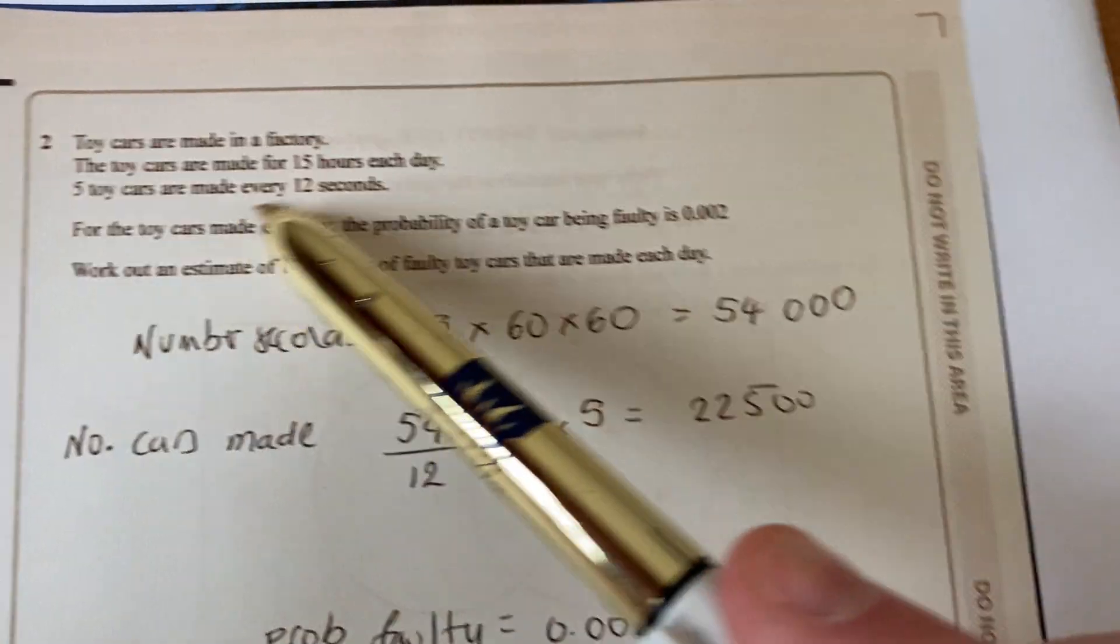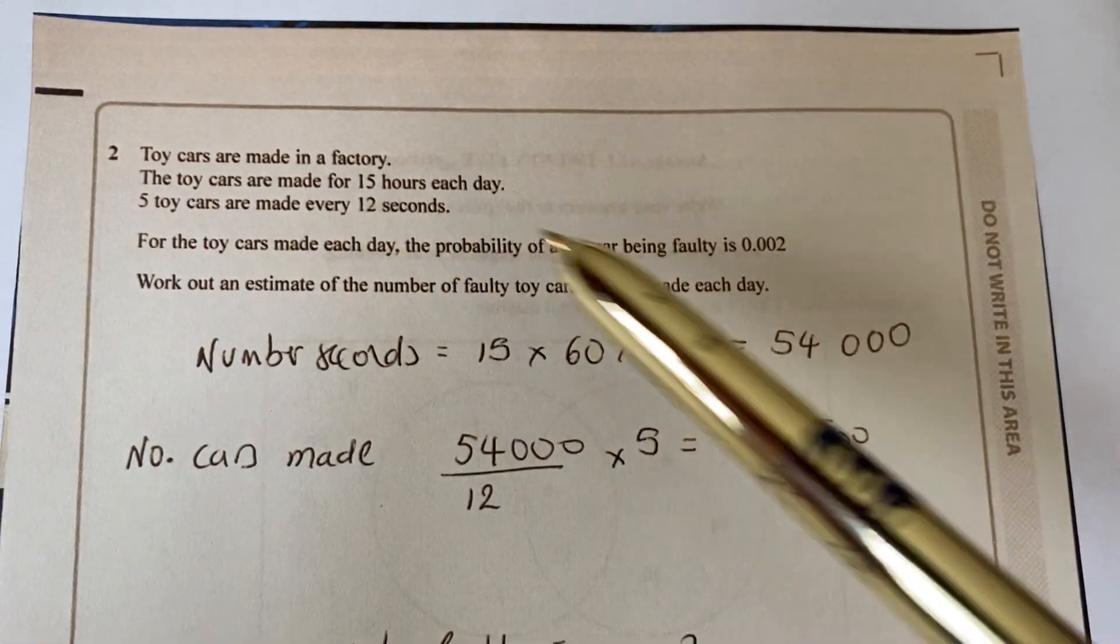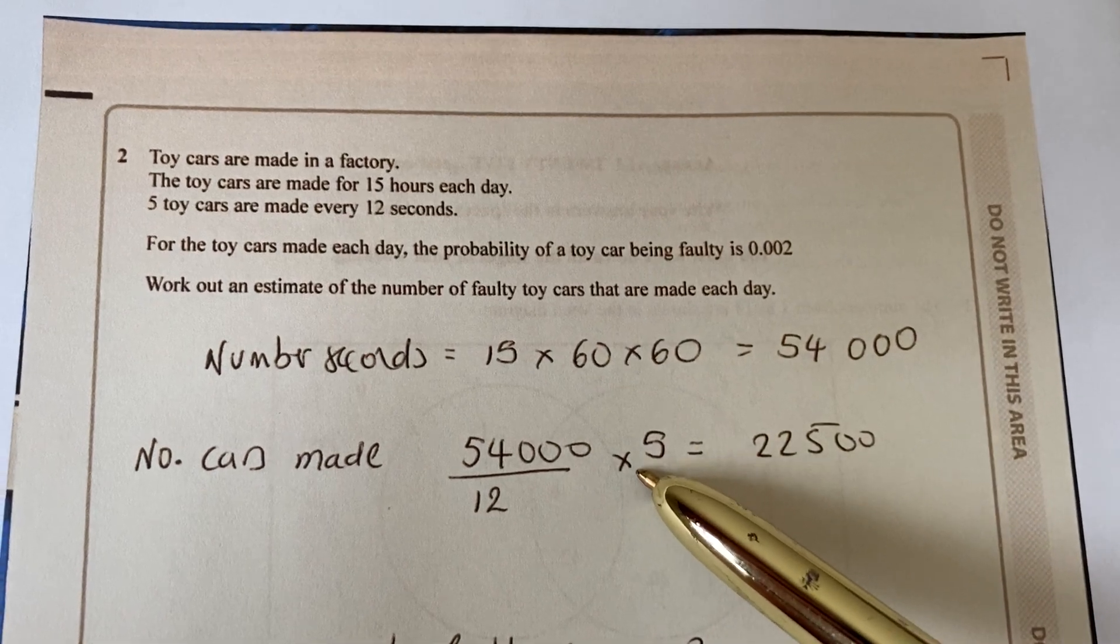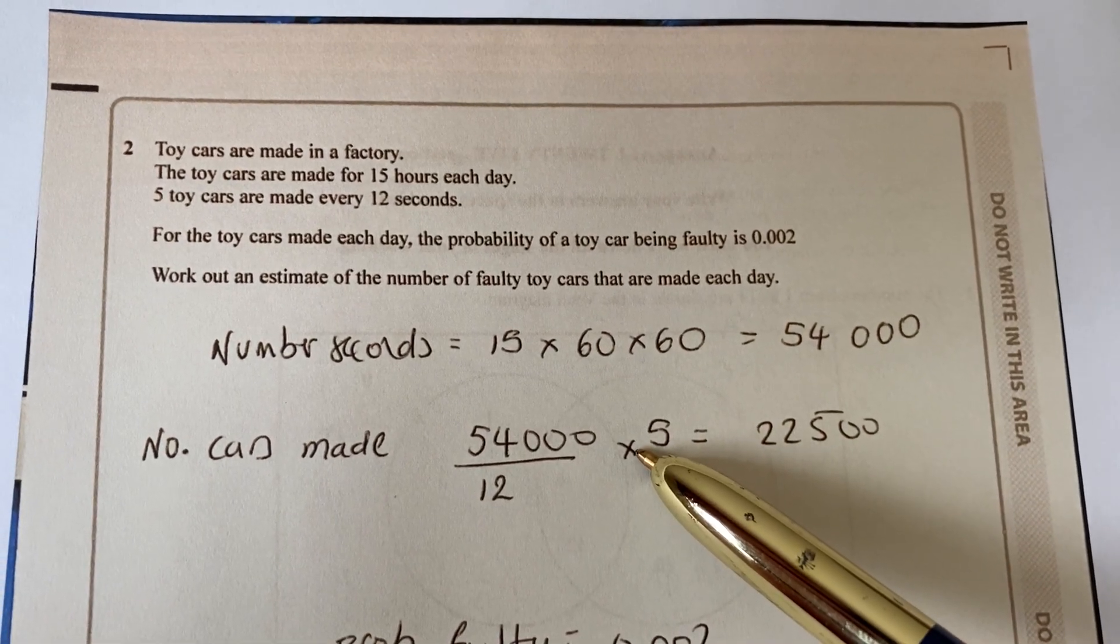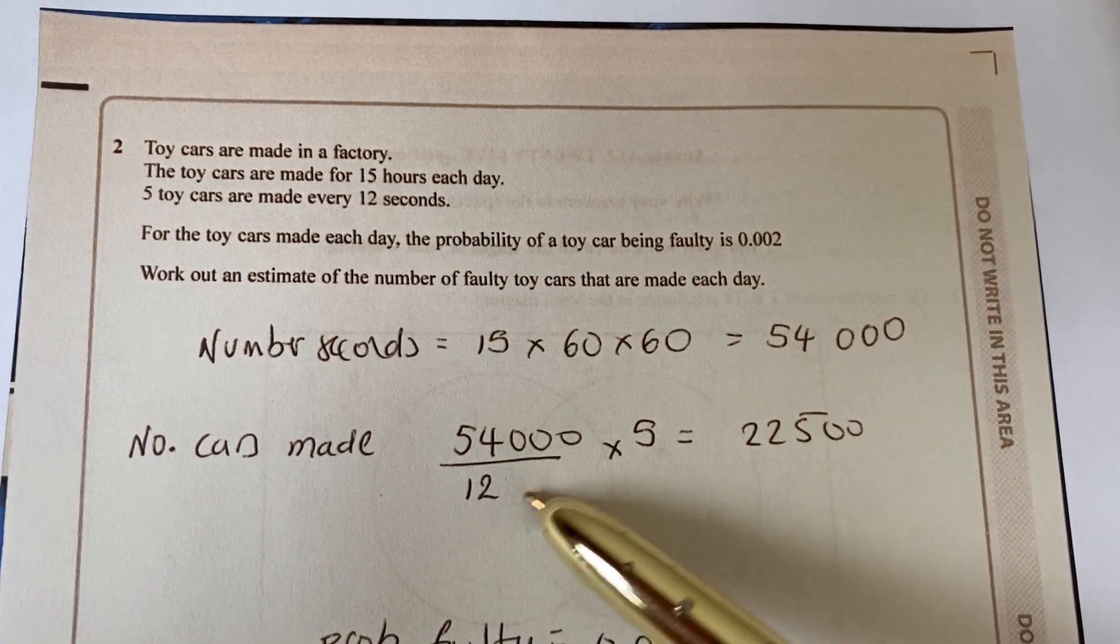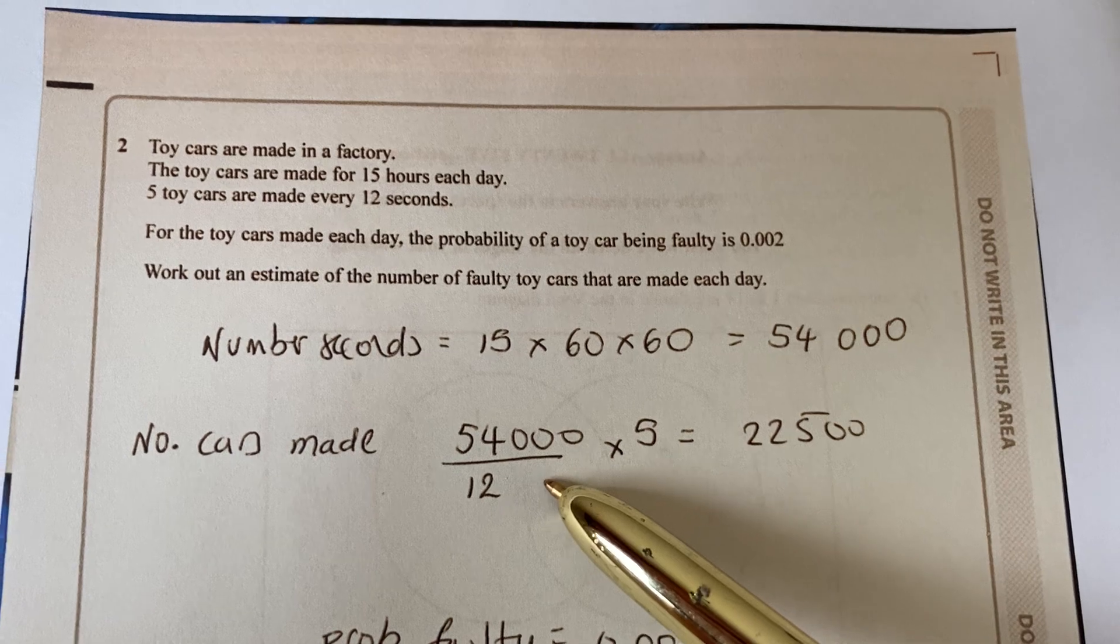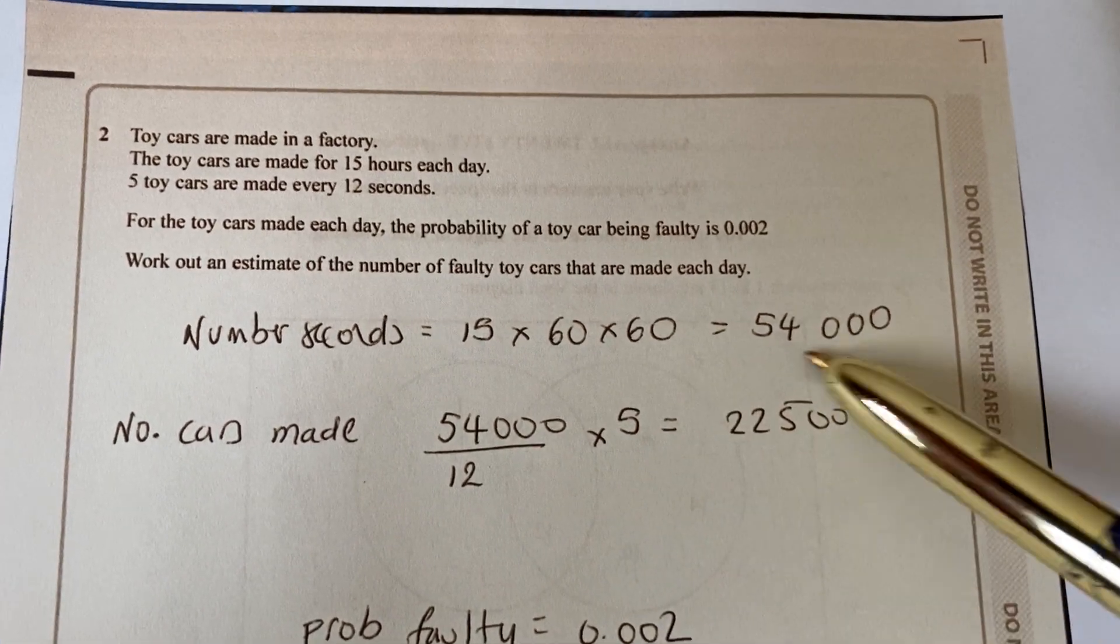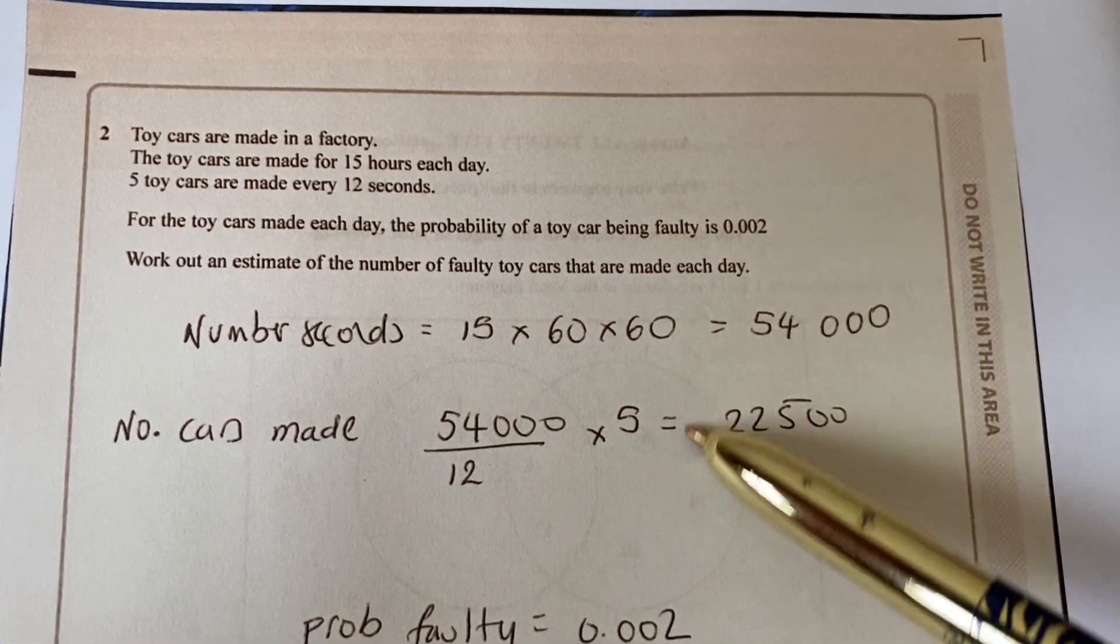It says five are made every 12 seconds. So if you multiply 54,000 by five, that would be how many there would be if there was one per second. But they're split into groups of 12. So divide it by 12 and you find out that there are actually 22,500 cars made.